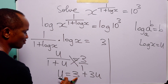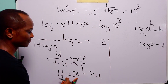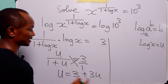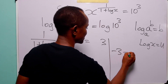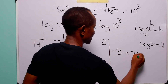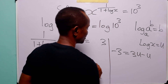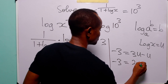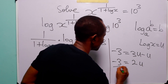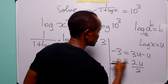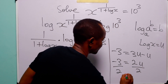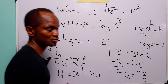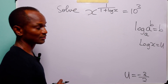From here, bringing the constant term 3 over to the left hand side and taking u over to the right hand side, we have minus 3 is equal to 3u minus u. We have minus 3 is equal to 2u, and dividing both sides by 2 we have u is equal to minus 3 over 2.